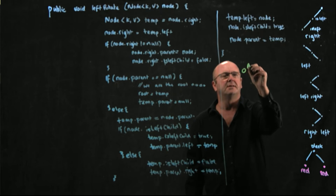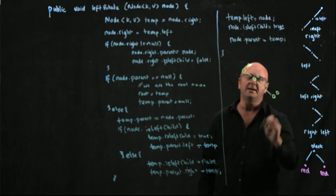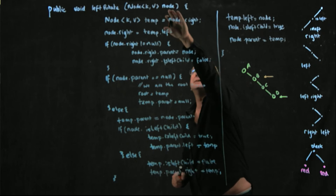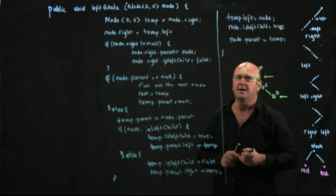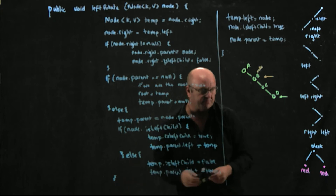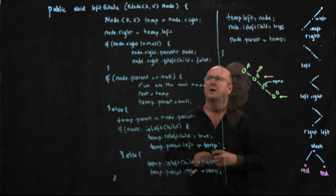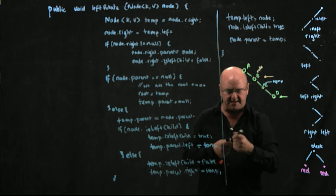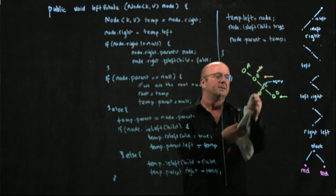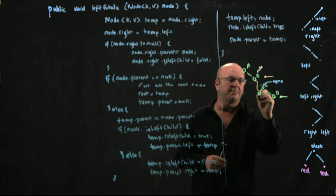Let's walk through it with a diagram. Here's A, here's B, here's C, and here's D. D is the node that causes the violation, and B is the node that I pass in — so this is initially going to be node. I set a temporary pointer to point to node's right child, so temp points to C. Then I set node's right child to temp's left child — I may have something there or I may not, so nodes right child is now set to temporary's left child.